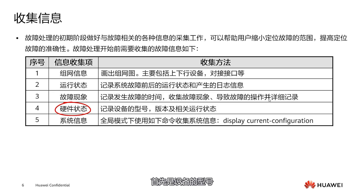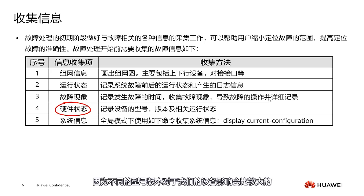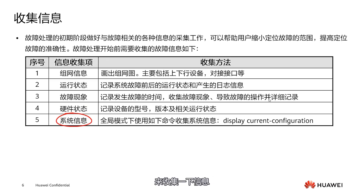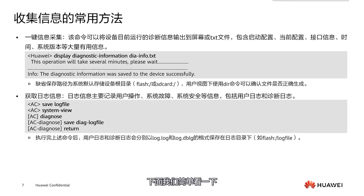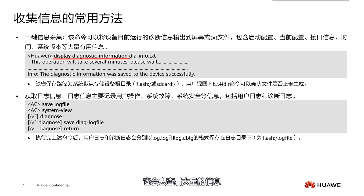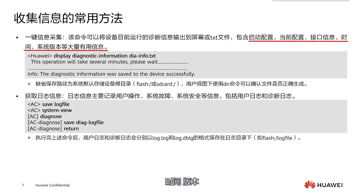Fourth is the hardware state, starting with the model version of the device, which needs to be identified. Different model versions significantly impact the devices, along with their operational states like CPU, memory, etc. Finally, we have system information, which can be gathered using relevant configuration commands. We will briefly look at the methods to collect information, such as the display diagnostic information command, used to gather fault information. Executing just the command 'display diagnostic information' reveals a wealth of data, including startup, runtime, and interface info. Running this command can take approximately 10 minutes, displaying extensive details on your screen.